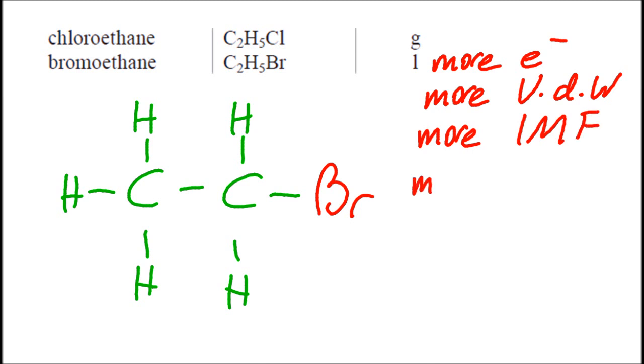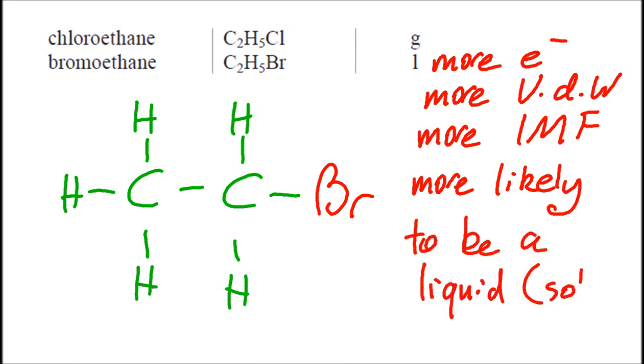It's got more intermolecular forces that have to be broken. And so the bromine is more likely to be the liquid or even the solid chemical, when compared to the chlorine, for example, or the fluorine-based chemical. And the astatine, well, that's the lowest halogen. Almost certainly, if that exists, it's going to be a solid. Loads of electrons. Loads of van der Waals.